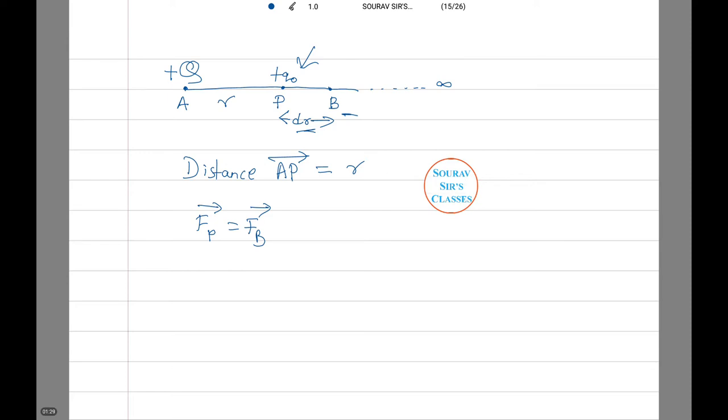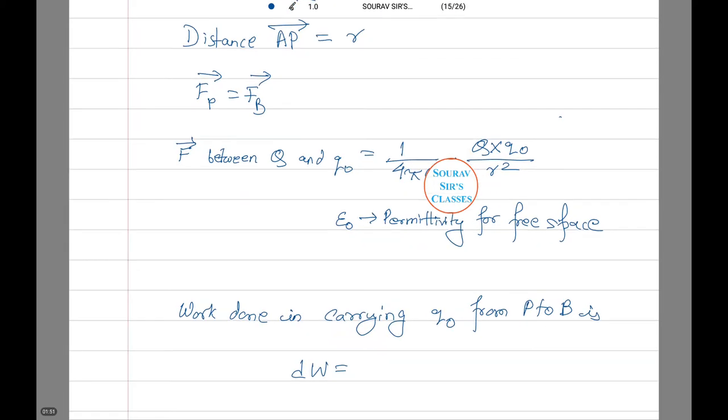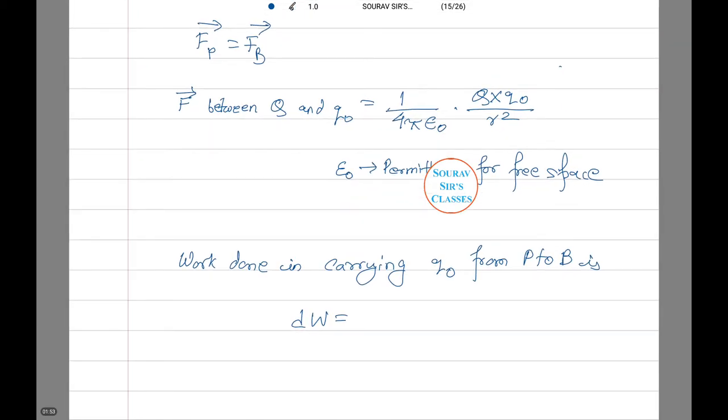Therefore, the force between Q and Q₀ be 1 by 4πε₀ into Q into Q₀ by r². Notice here ε₀ means permittivity for free space. Now we calculate the work done in carrying this charge from P to B.